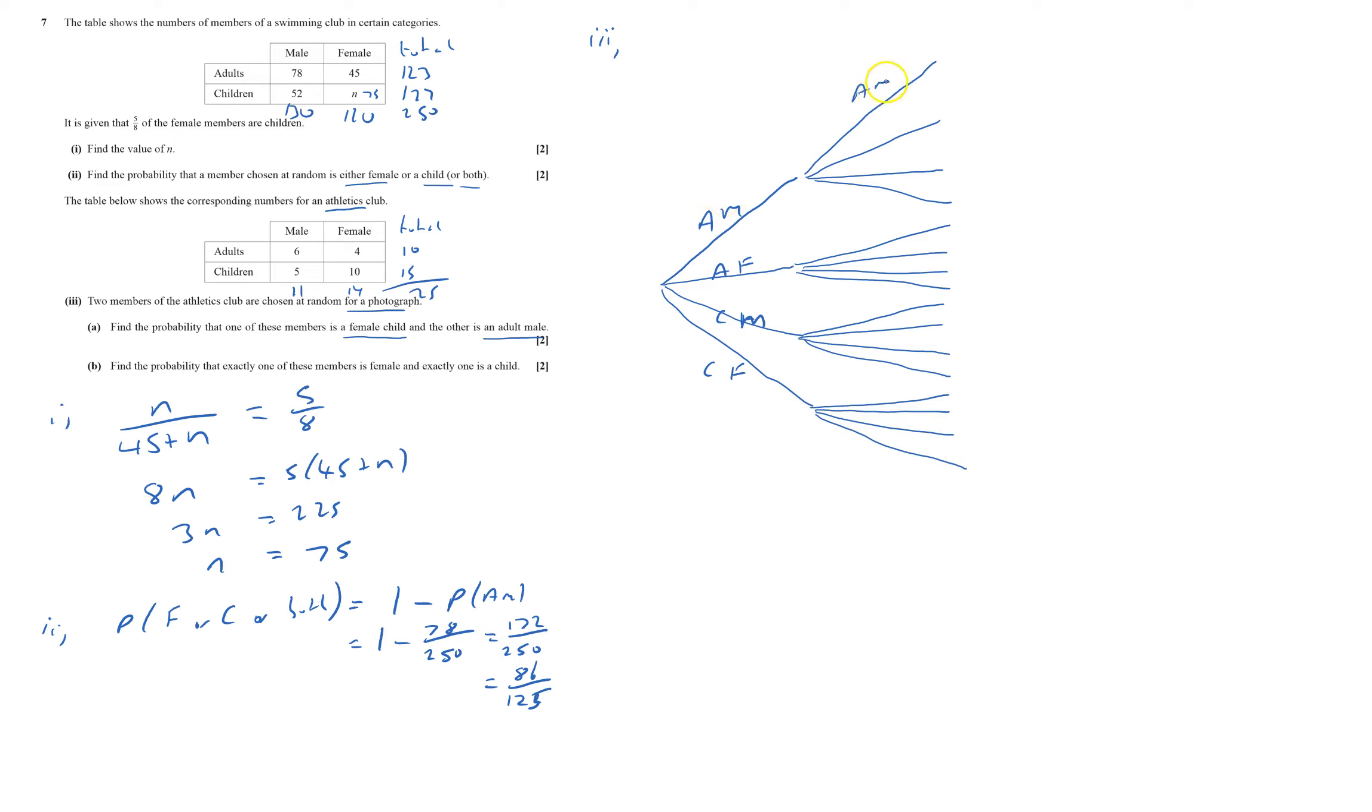And I'm going to use the same coding, so the top ones, adult male and adult female, then child male and child female. I'm not going to put everything in there because I don't need everything. So probably adult male will be 6 out of 25 to start with, and probably adult male the second one will obviously be 5 out of 24 because one adult male would have been chosen. And so on. Adult female will be 4 out of 25, and child male will be 5 out of 25, and child female will be 10 out of 25. And child female down here would be 9 out of 24.